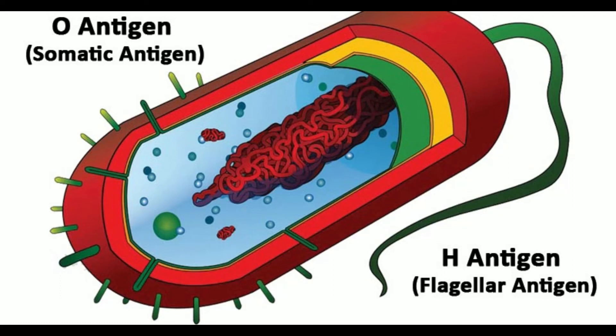O antigen and H antigen: definition and 21 key differences. The surface structures of bacteria have considerable antigenic heterogeneity. Often these antigens are used as part of a serologic classification system for bacteria. The classification of the 2000 or so different Salmonella is based principally on the types of O (LPS side chain) and H (flagellar) antigens. The antigenic type of the bacteria may be a marker for virulence related to the clonal nature of pathogens, although it may not actually be the virulence factor.